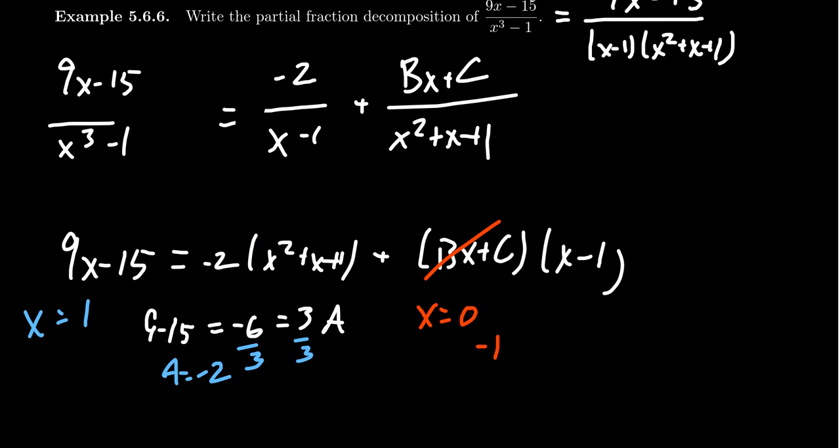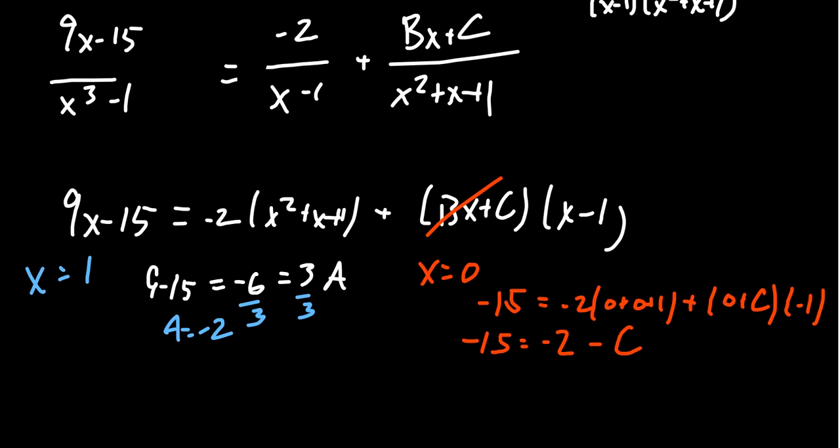The left-hand side will be negative 15 when we plug in x equals 0. Then we have negative 2 times 0 plus 0 plus 1, and then we get 0 plus C times negative 1. Simplifying, we get negative 15 equals negative 2 minus C. Adding 2 to both sides, we get negative 13 equals negative C, so C equals 13.